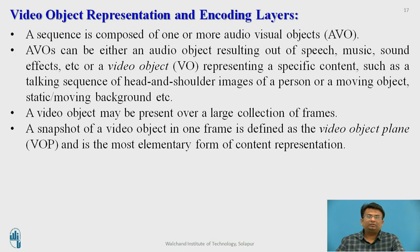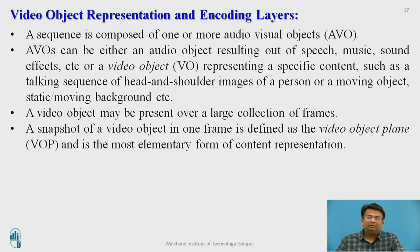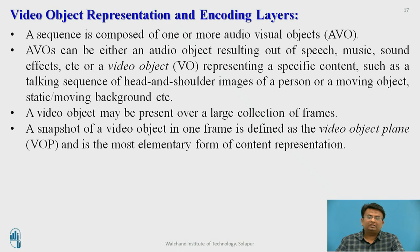A video sequence is composed of one or more audio-visual objects. A video object (VO) can be either an audio object — resulting from speech, music, or sound effects — or a video object representing specific content such as a moving object, static background, or moving background. A video object may be present over a large collection of frames. A snapshot of a video object in one frame is defined as a Video Object Plane (VOP).